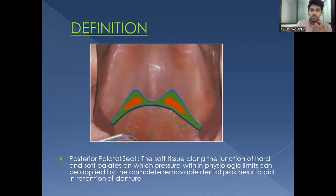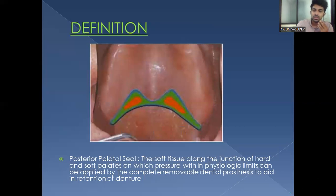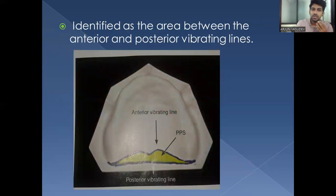The posterior palatal seal area is the soft tissue along the junction of hard and soft palates on which pressure within a physiological limit can be applied by the complete removable dental prosthesis to aid in the retention of the denture. It is the most posterior part of the denture, and it is identified as the area between the anterior and the posterior vibrating line. The anterior vibrating line is a cupid bow shape, while the posterior vibrating line runs almost straight from hamular notch on one side to the other.